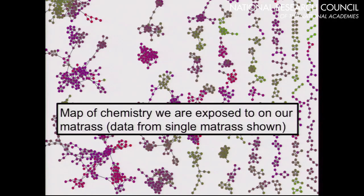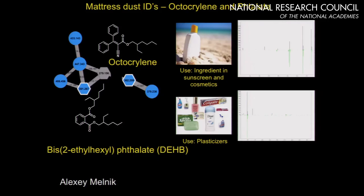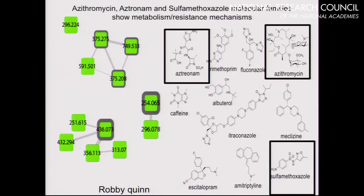The key feature why people come here is molecular networking. This is a single dataset from a mattress — we're beginning to launch a project on how mattresses, or people sleeping on mattresses, relates to incidence of asthma, for example. Here's just the diversity of chemistry you can detect from a single mattress: phthalates, sunscreens, and those types of molecules, at least based on the MS2 signature and parent mass ions available.